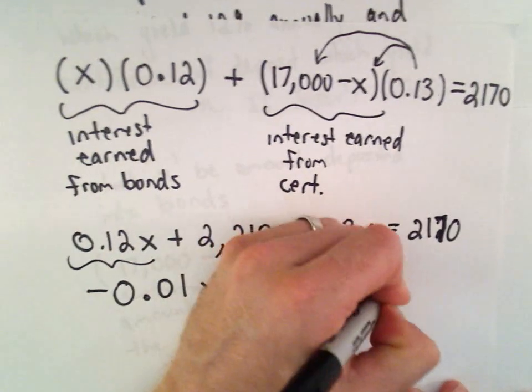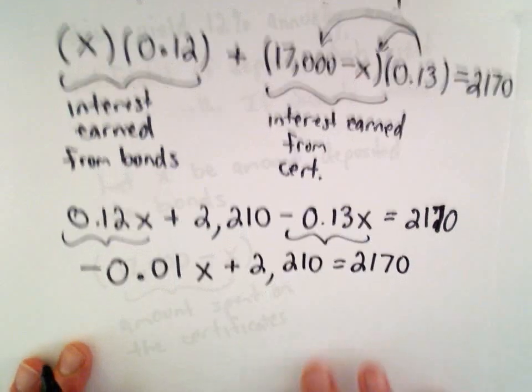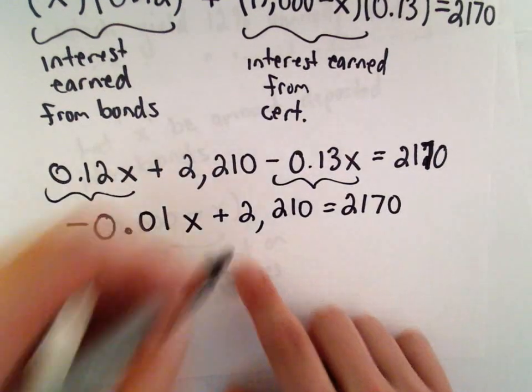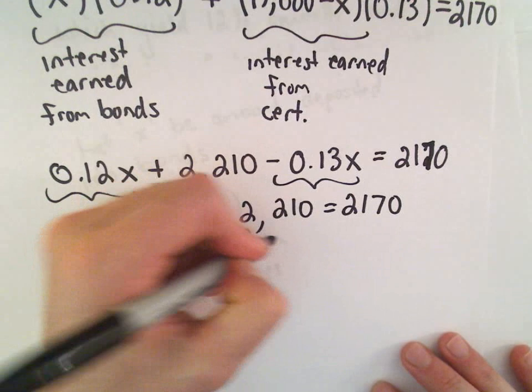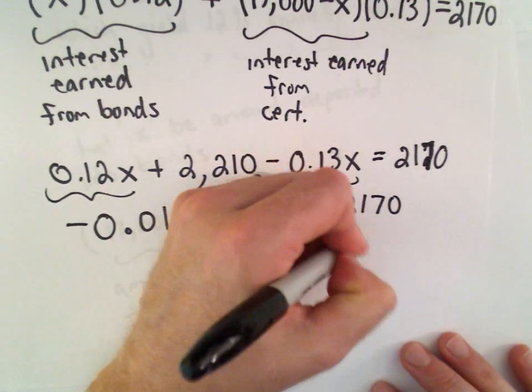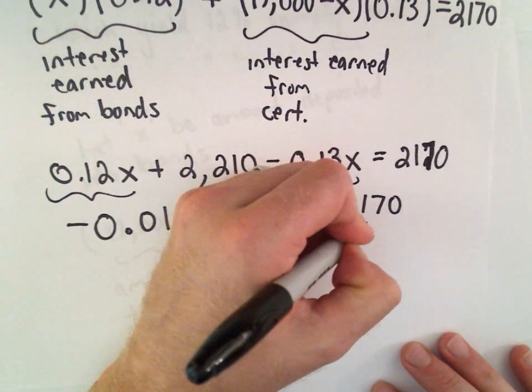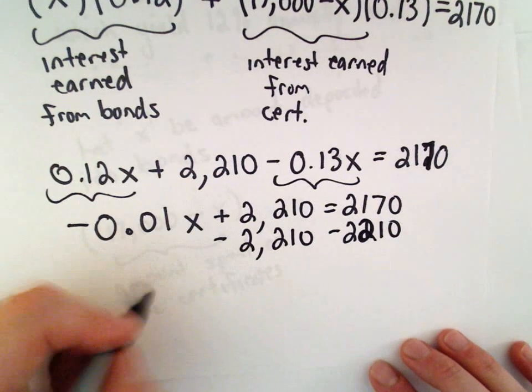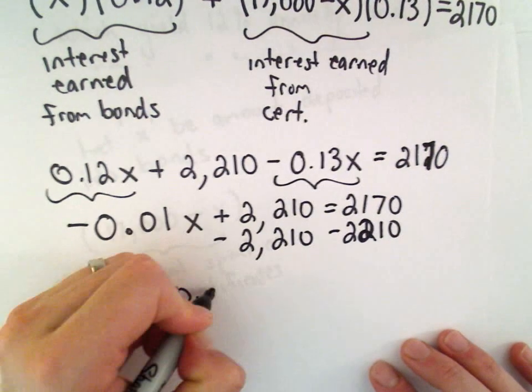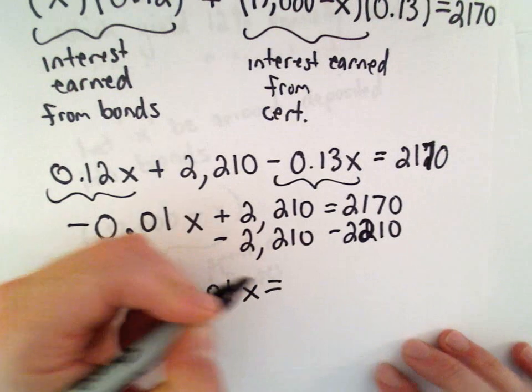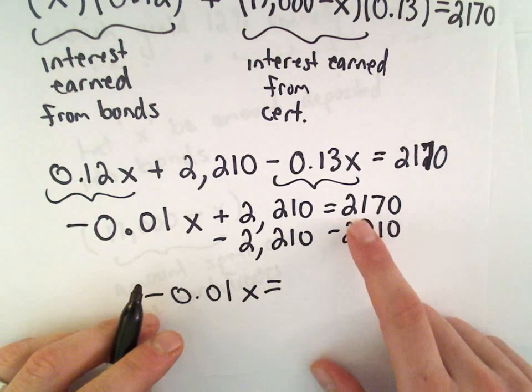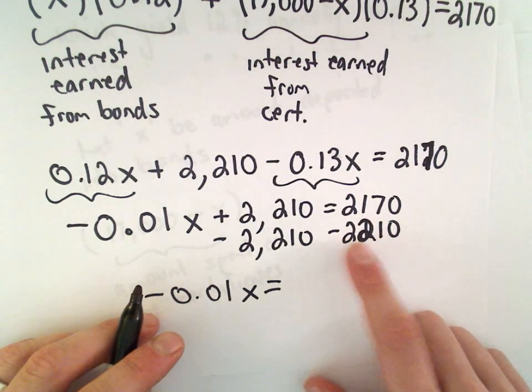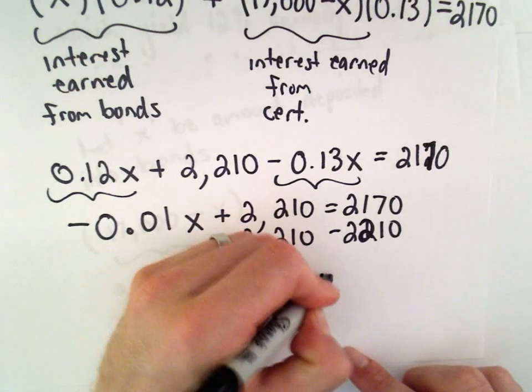At this next step, I will subtract 2,210 from both sides. That will leave us with negative 0.01X on the left side. And if we subtract on the right side, 2170 minus 2210 will leave us with negative 40.